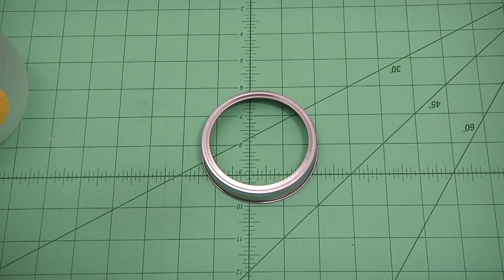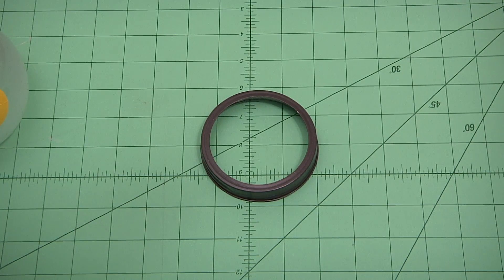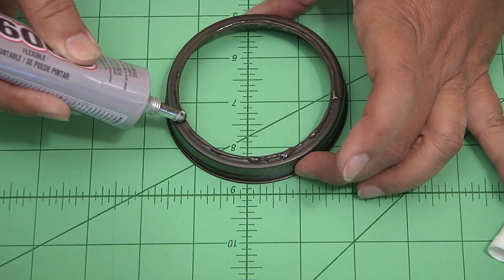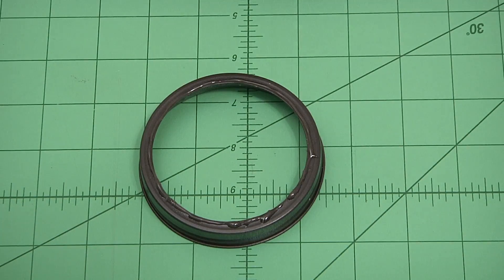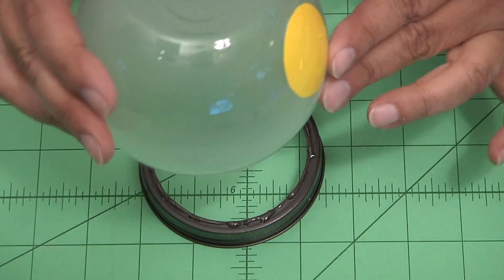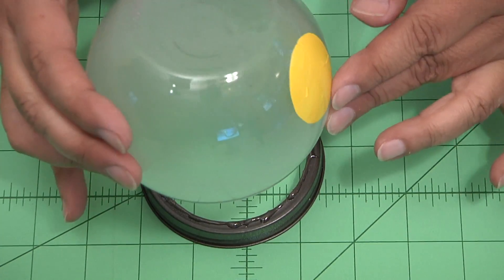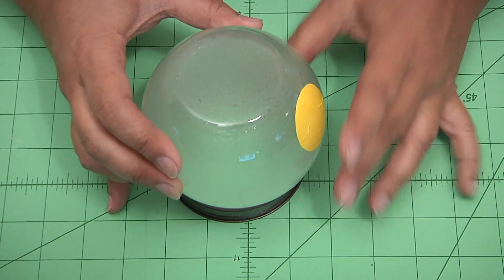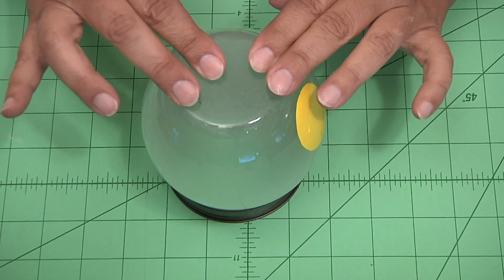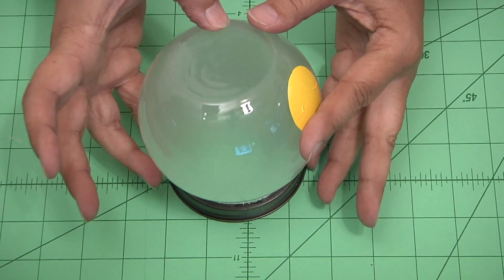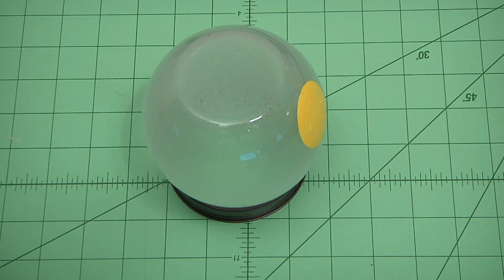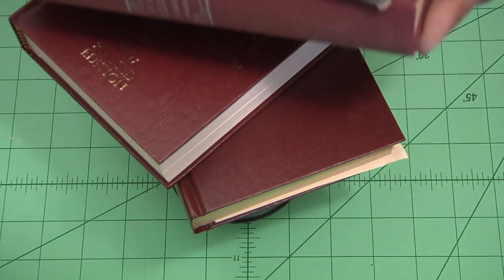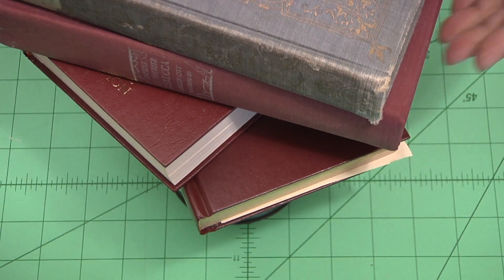Spray paint the jar rim black and let it dry. Once it's dried, go ahead and use some really strong glue all the way around the edge. Now take your sphere, your bowl, and attach it to the top of the rim. Carefully making sure that it lands right in the perfect spot. Now I went ahead and put a couple books on top and let it sit overnight so I got really good and dry.